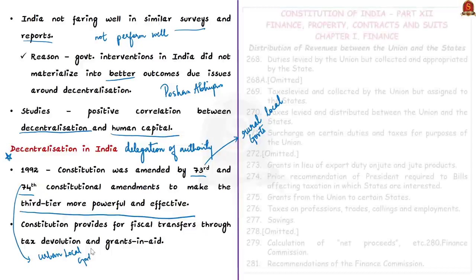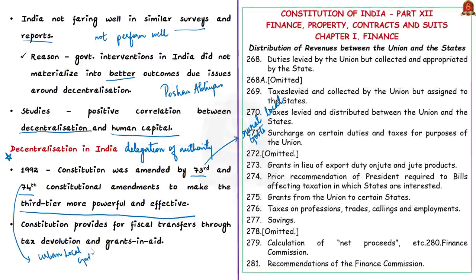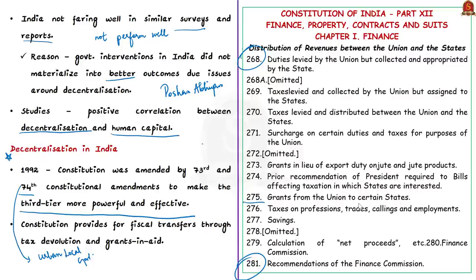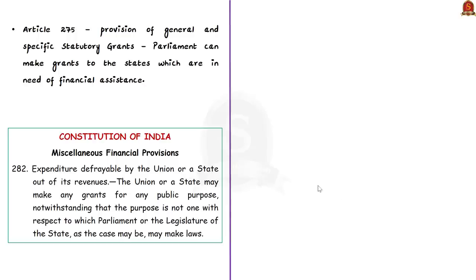These are covered under Articles 268 to 281 — the section on distribution of revenues between the union and the states. Article 275 provides for general and specific statutory grants under which parliament can make grants to states in need of financial assistance. Additionally, the center is empowered to provide discretionary grants under Article 282 for public purposes.